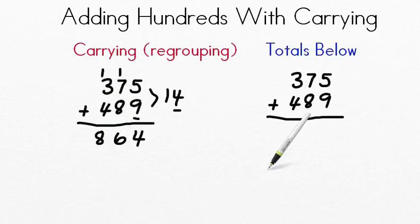Now I'm going to show you the totals below method. With the totals below method, it doesn't matter whether you add the ones first, the tens, or the hundreds. In this case, we're going to add the ones first. And you'll see why it doesn't really matter if you add the hundreds or the ones or the tens first because you're going to combine them all. Well, we found that 9 plus 5 was 14. So we're going to put down our 14 right here. So now we've added the ones.